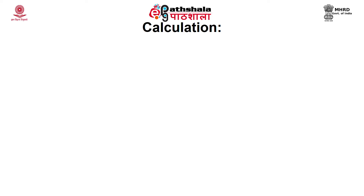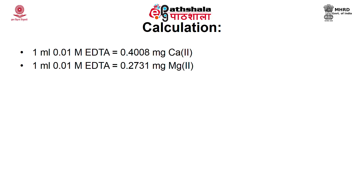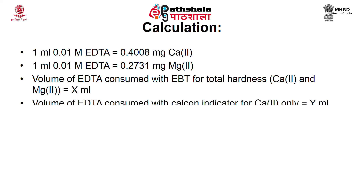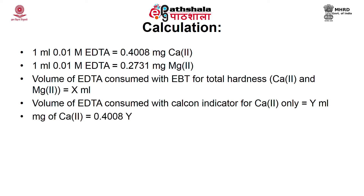Continue the titration unless the blue color persists for more than 20 seconds. Calculations: 1 ml of 0.01 M EDTA = 0.4008 mg of calcium; 1 ml of 0.01 M EDTA = 0.2731 mg of magnesium ion. Volume of EDTA consumed with EBT for total hardness (Ca²⁺ + Mg²⁺) = x ml. Volume of EDTA consumed with calcone indicator for calcium only = y ml. Milligrams of calcium = 0.4008y; milligrams of magnesium = 0.2731(x − y).